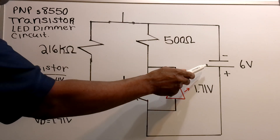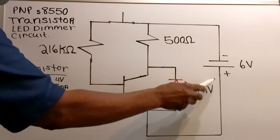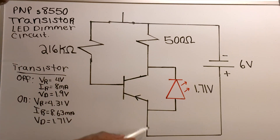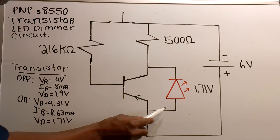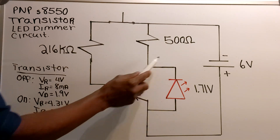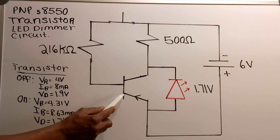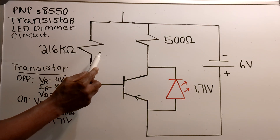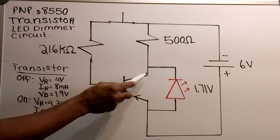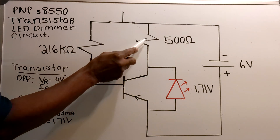The current flow goes from the volt source. Some current will flow through the diode, some current will flow through the emitter and through the base, and the rest of the current will flow through the 500 ohm resistor.